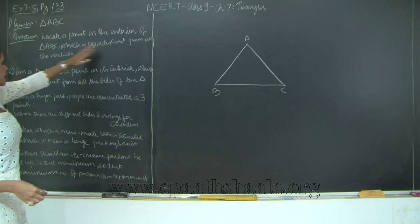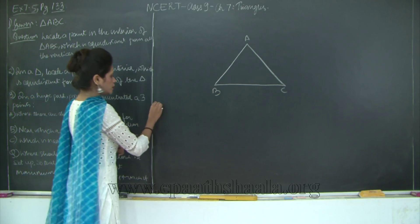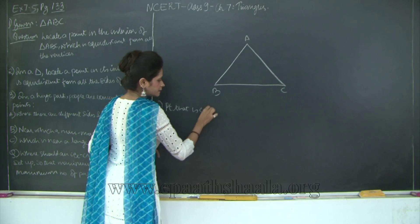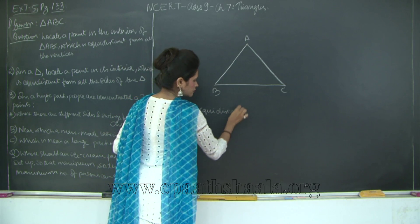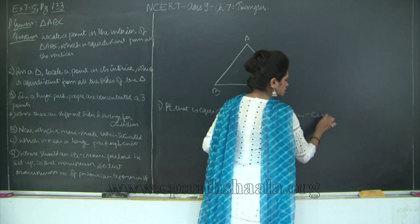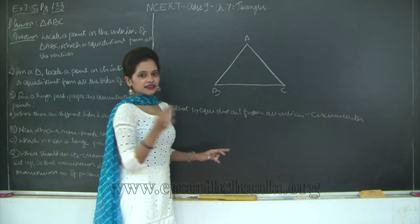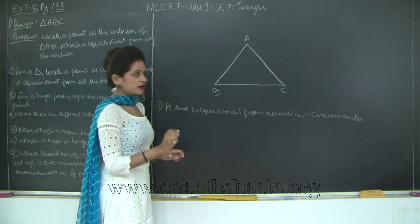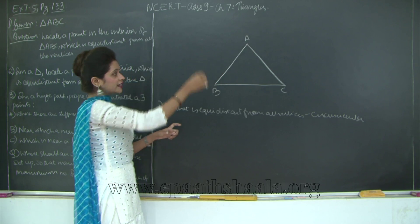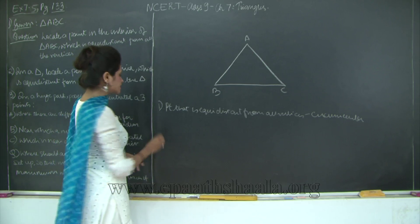What we need to do is locate a point in the interior of triangle ABC which is equidistant from all the vertices. The point that is equidistant from all vertices is known as the circumcenter. When you take the circumcenter as the center and draw a circle using the distance from the center to any vertex as the radius, it will touch all the vertices of your triangle, and that circle will be known as the circumcircle.